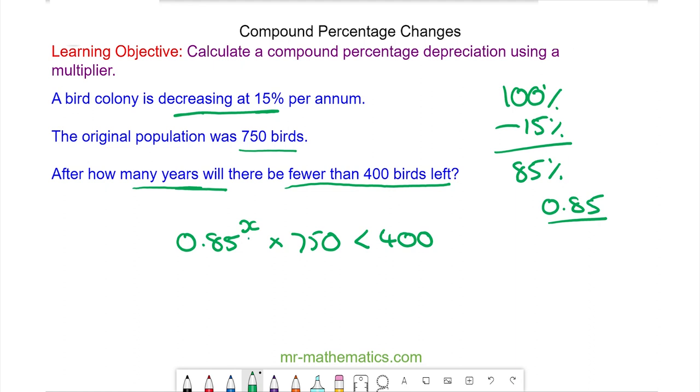Because we need to find the power of x we're going to use a method of trial and improvement. We'll begin by using x equals 3. So we have 0.85 to the power of 3 multiplied by 750 and this is 460 birds which is too many.